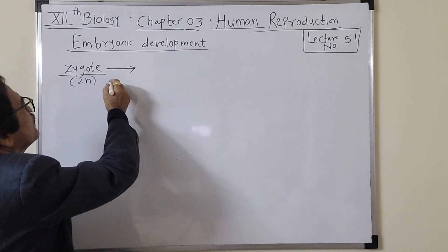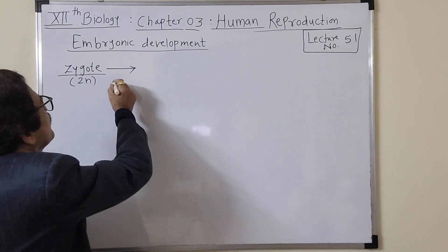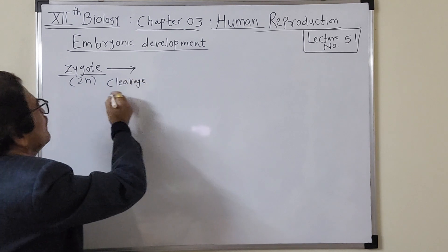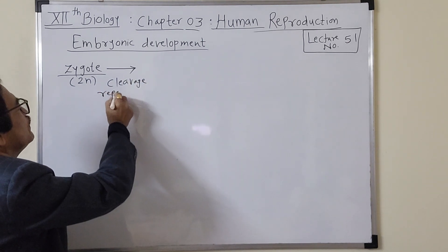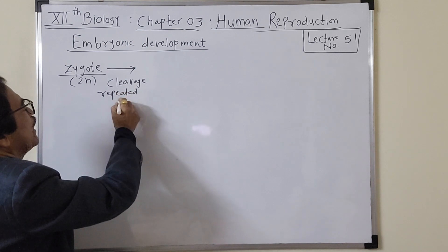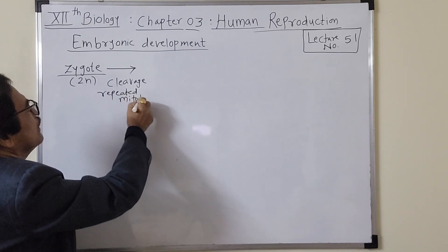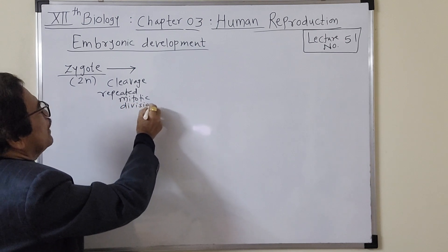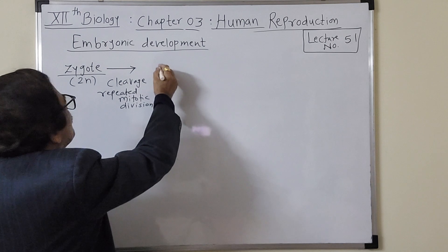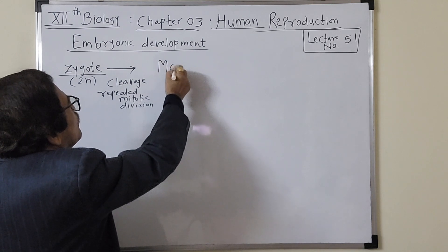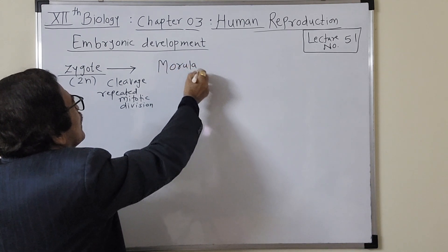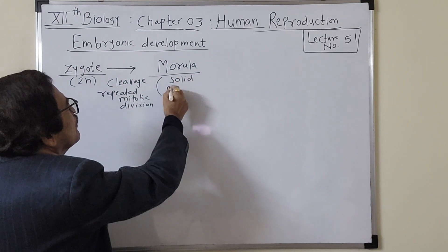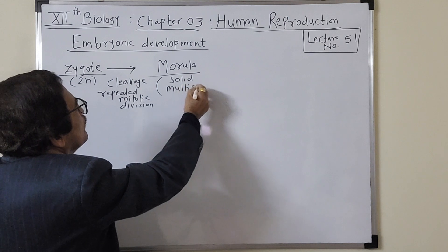After zygote formation, the process of cleavage starts immediately. Cleavage involves repeated mitotic divisions, and by that process a multicellular ball of embryo is formed. This solid multicellular ball is called morula — it does not have any cavity inside.